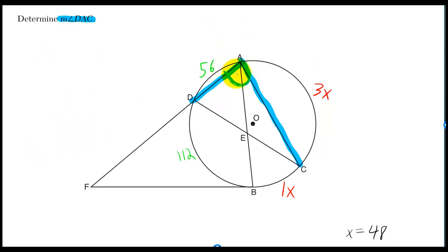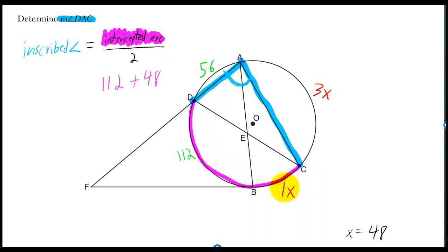Lastly, we've got to find angle DAC. An inscribed angle is equal to half the intercepted arc. Our angle cuts off DC. Recalling X is 48, DC is 112 plus 48. And that all comes out to 80.